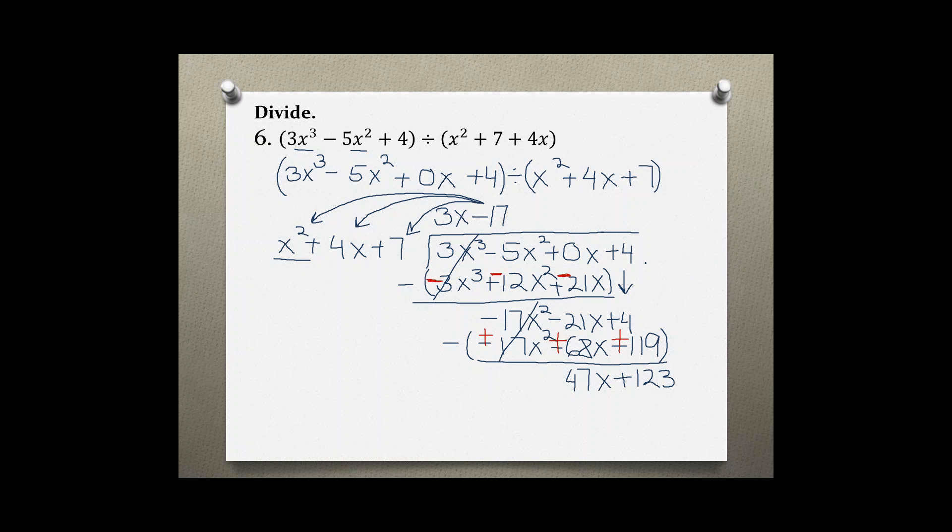We have a remainder, so we are done, which means this division problem did not divide evenly. So, we are left with the remainder, and to rewrite the answer,